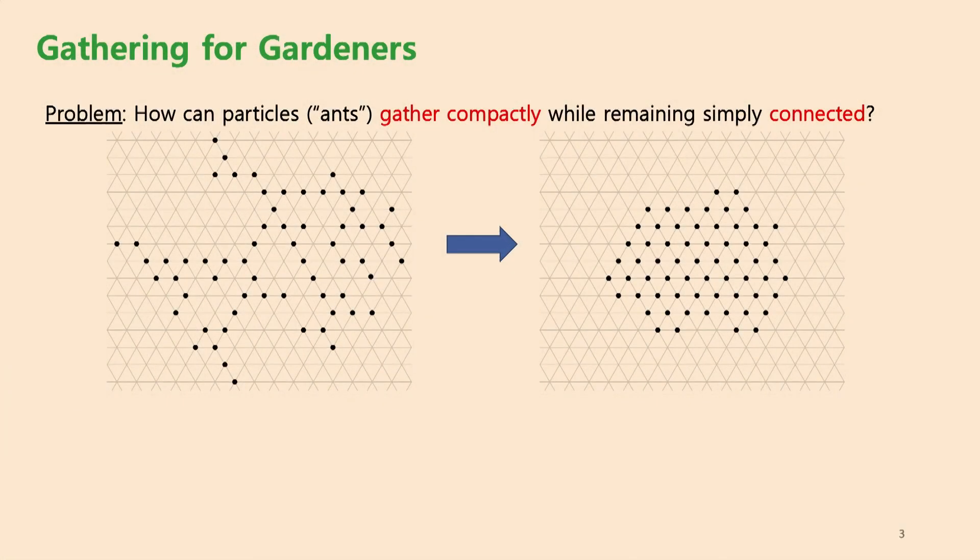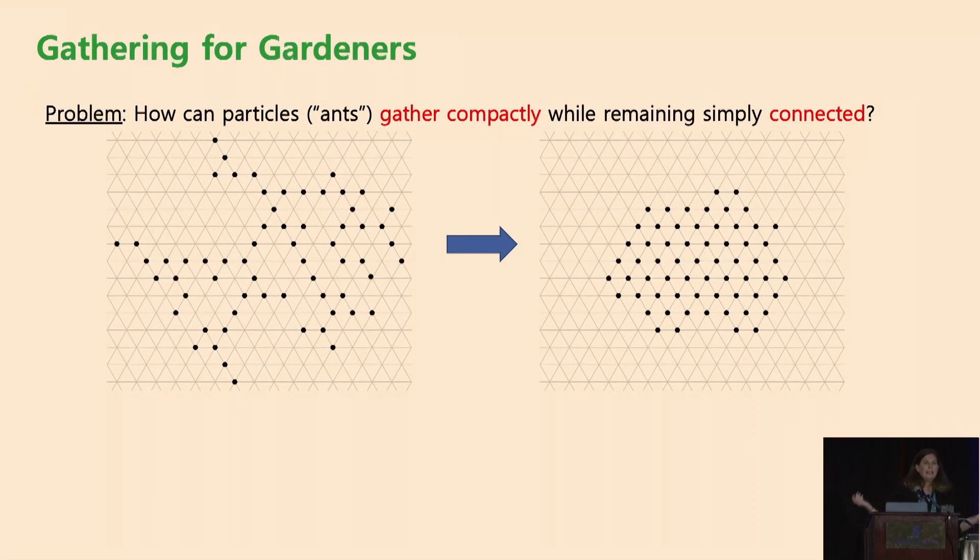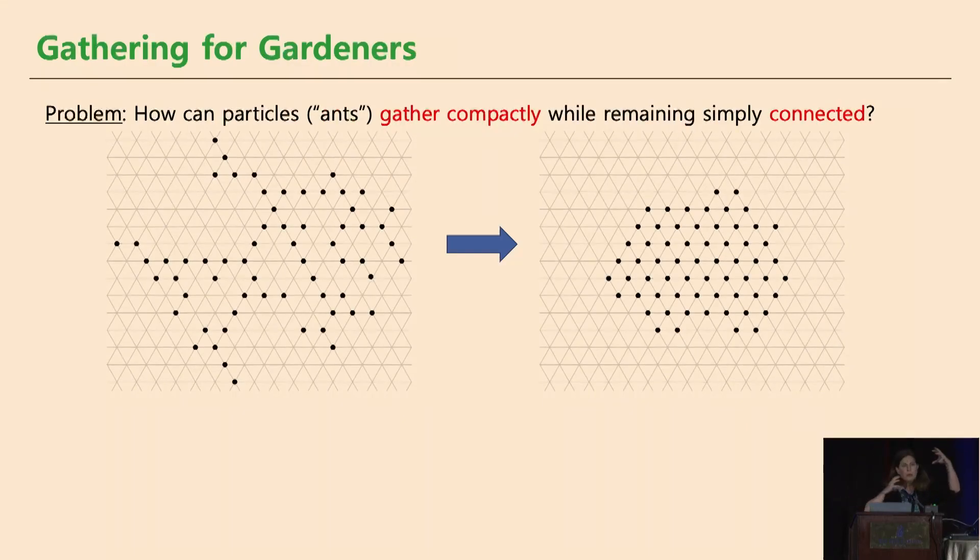So here's the problem. You're in a nice triangular lattice garden. You have a bunch of particles that are sitting at vertices, maybe they're ants, and they're somehow connected and they want to compress. They want to gather together in some more compact conformation, which seems easy enough.